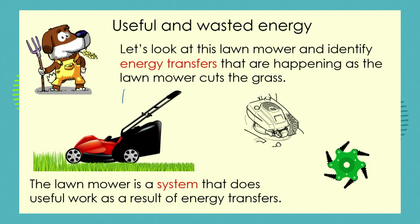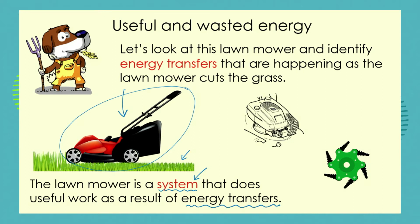So let's look at our lawnmower and let's try and identify the energy transfers that are happening as the lawnmower cuts the grass. We must remember that the lawnmower is a system, and systems are where we have a group of parts all working together to accomplish a particular process. In this case, our process is to cut the grass, and we need this system in order to achieve that. But now the system has to do its useful work, which is cutting the grass, and it does this with a number of energy transfers. So let's briefly describe what some of these energy transfers are.